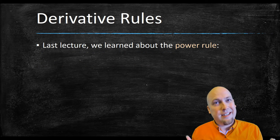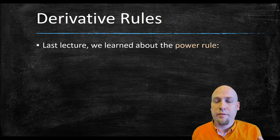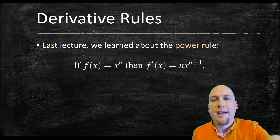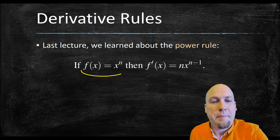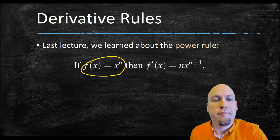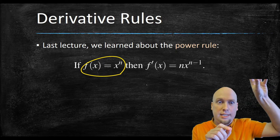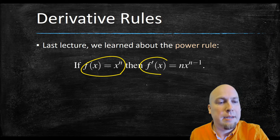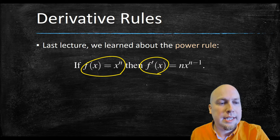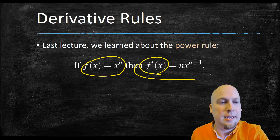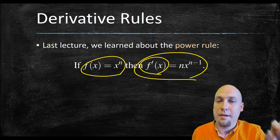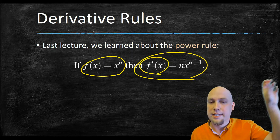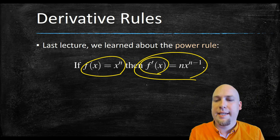In the previous lecture, we already looked at one derivative rule — the power rule — which said that if your function is a power function, some function of the form x to the power of a constant n, then its derivative — f prime — is n times x to the power n minus 1. The exponent n comes out in front and the exponent gets decreased by 1.